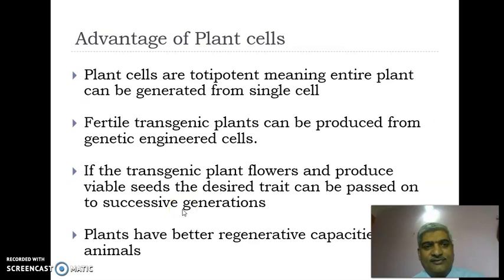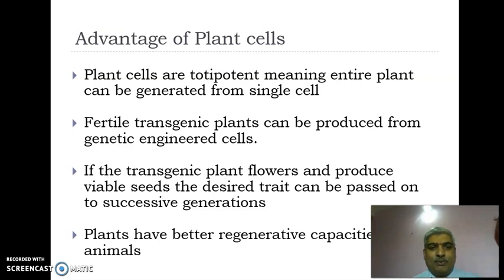Plants have certain advantages which make them suitable for genetic engineering. Plant cells are totipotent, meaning an entire plant can be generated from a single cell. Fertile transgenic plants can be produced from genetically engineered cells, and if the transgenic plant flowers and produces viable seeds, the desired trait introduced through plant genetic engineering can be passed on to successive generations.